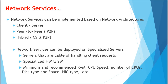Networks can implement services based on three different types of architectures. The first is client-server, where there is a server machine and many clients connected to it. The second is peer-to-peer, where two machines exchange services or data directly. The third is hybrid, which is a combination of client-server and peer-to-peer. You can implement network services in any of these architectures.